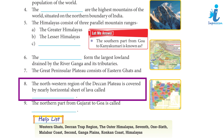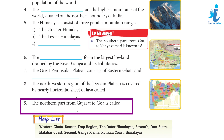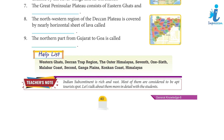8. The north-western region of the Deccan Plateau is covered by a nearly horizontal sheet of lava called Deccan Trap. 9. The northern part from Gujarat to Goa is called Gokan Coast.